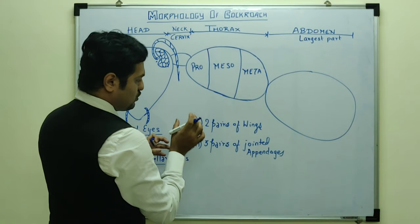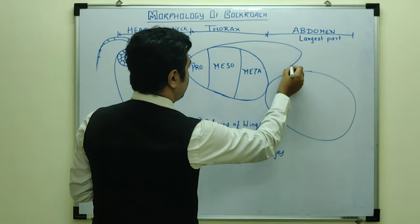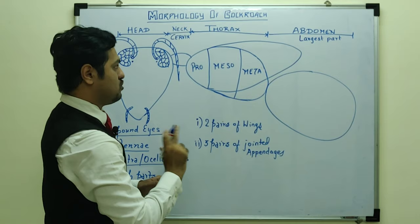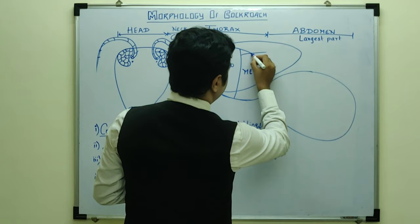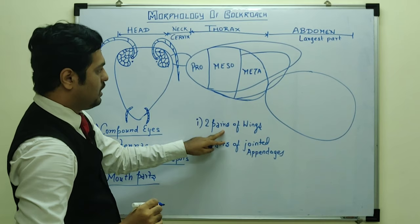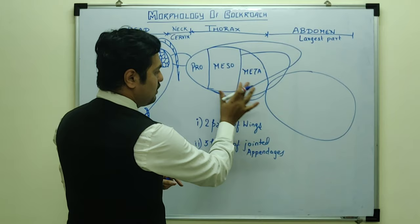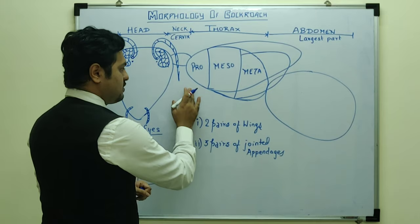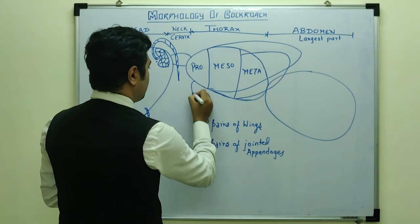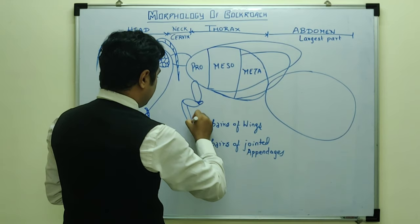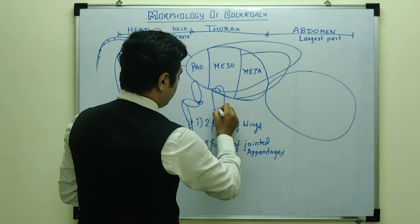The first pair of wings arises from the mesothorax, not from the prothorax. The second pair of wings arises from the metathorax. So the two pairs of wings arise from the mesothoracic and metathoracic regions. The three pairs of jointed appendages arise from the prothoracic, mesothoracic, and metathoracic segments — one pair from each thoracic segment.